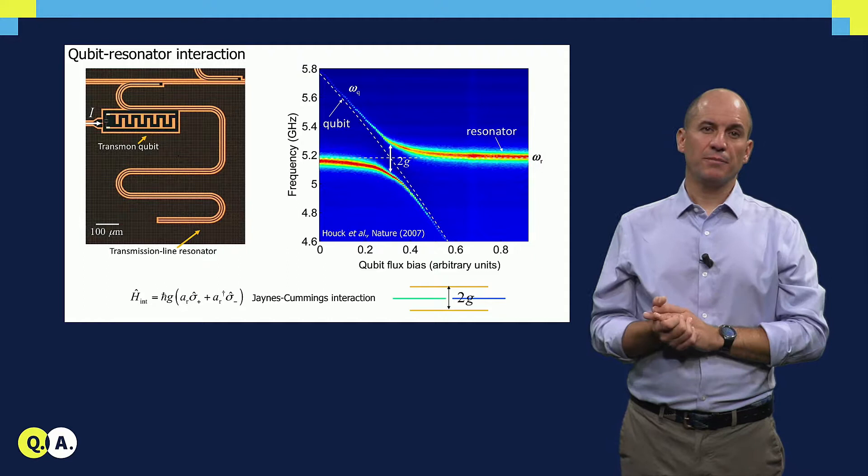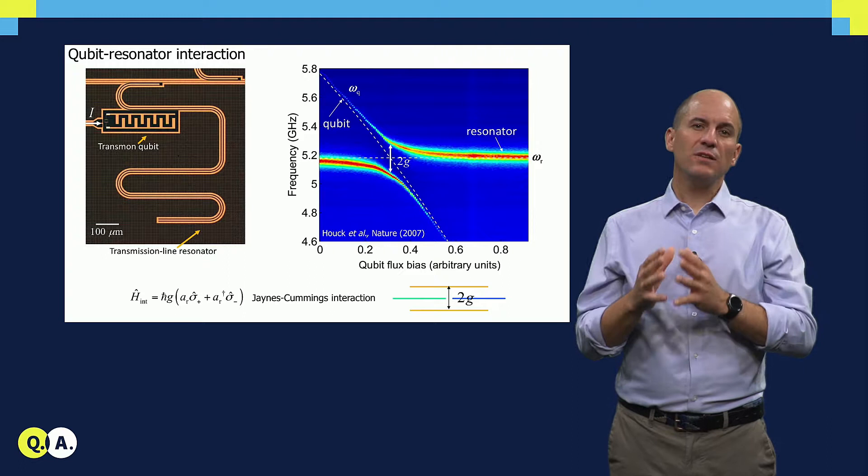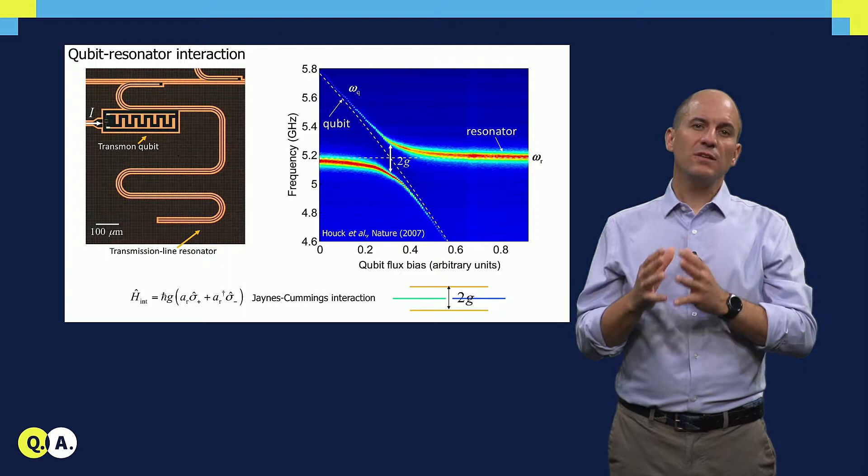Most of the time, however, we avoid this resonant regime. We tend to focus on the so-called dispersive regime in which the detuning delta of the qubit with respect to the resonator is several times larger than G in magnitude.